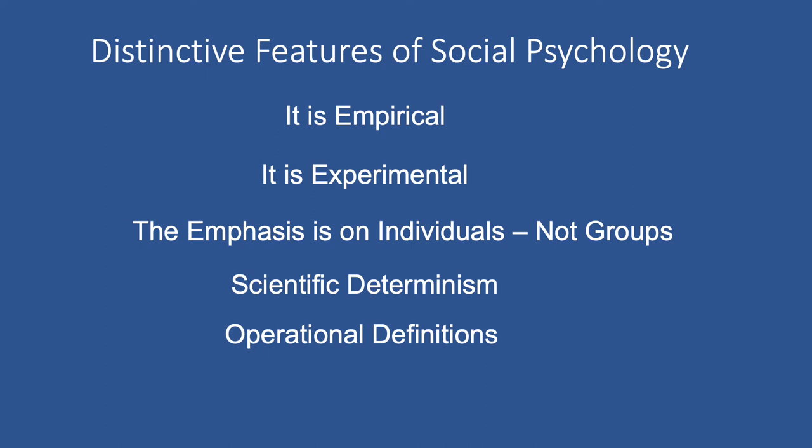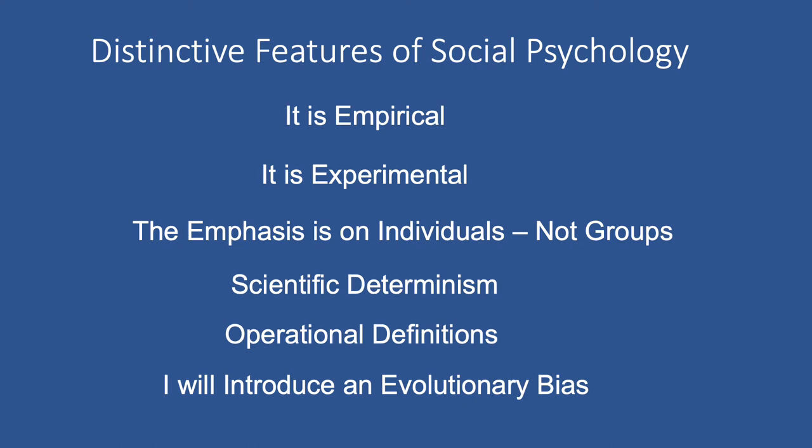People outside of psychology sometimes have a problem with operational definitions because they'll say that's not all interpersonal attraction is. We acknowledge that, but for our purposes in this study, that is how we are operationally defining it. Another thing I will be doing that most psychologists don't is introducing a strong evolutionary bias — I'm something of an evolutionary social psychologist. I think the way people behave now is a reflection of what they had to be like millions of years ago in our prehistoric environments. Essentially, we're walking around with caveman brains, and the world we live in now doesn't correspond as nicely to our psychology as the world we evolved in. That produces some interesting side effects, which we'll talk about more later in the course.